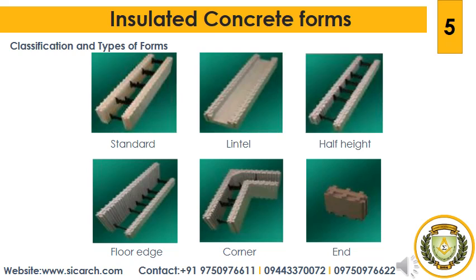The types and classifications of ICFs include standard forms, which are the bulk form with 50mm EPS panels on both sides and 8 hard plastic ties holding the panels. Dimensions of these forms are 1000 by 250 by 250 mm. Next are lintel forms, which in combination with half height forms, create the top layer of all wall gaps and hold the concrete, thus preventing thermal leaks. Dimensions of lintel forms are 1000 by 125 by 125 mm.